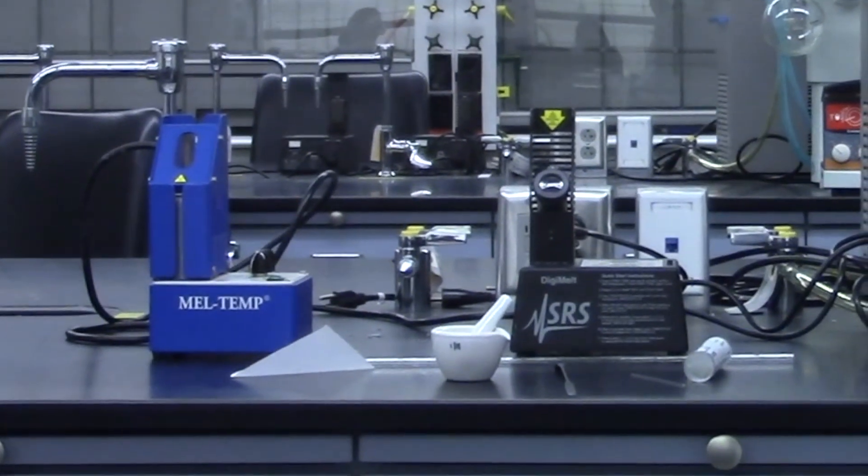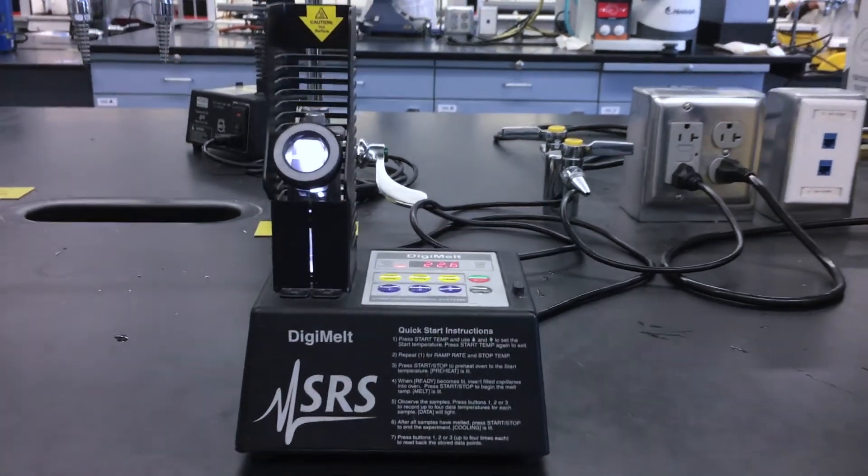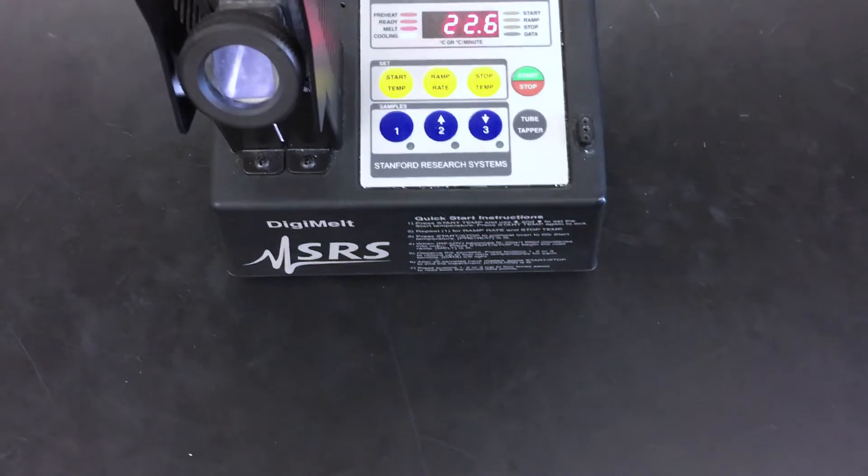There are two kinds of melting point apparatus, an analog and a digital device. The digital one has a built-in thermometer and a tube shaker to aid in loading the capillary.